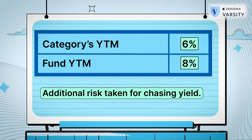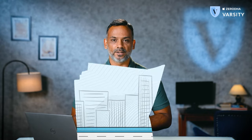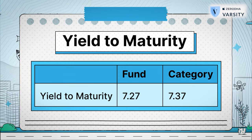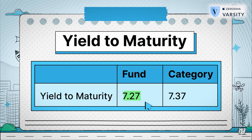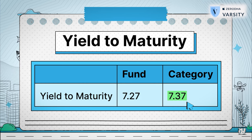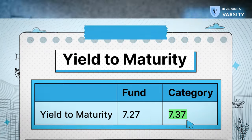Ideally, the fund's YTM should be lesser than the category's YTM — personally, I'm even okay with a lesser YTM compared to the category. Here is how this particular fund scores on the YTM check: the YTM of this fund is 7.27, whereas the category's average is 7.37. In my opinion, this is good.